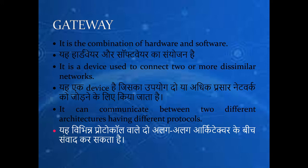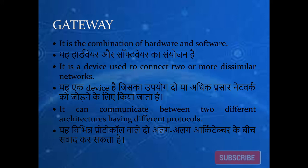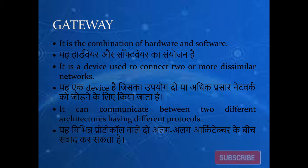A gateway can also communicate between two different architectures having different protocols. Different computers have different architectures — for example, an IBM computer will have a different architecture from another system. If you want data transmission from an IBM computer to another one, you must have a gateway so that connectivity is established between two systems of different architectures having different protocols.